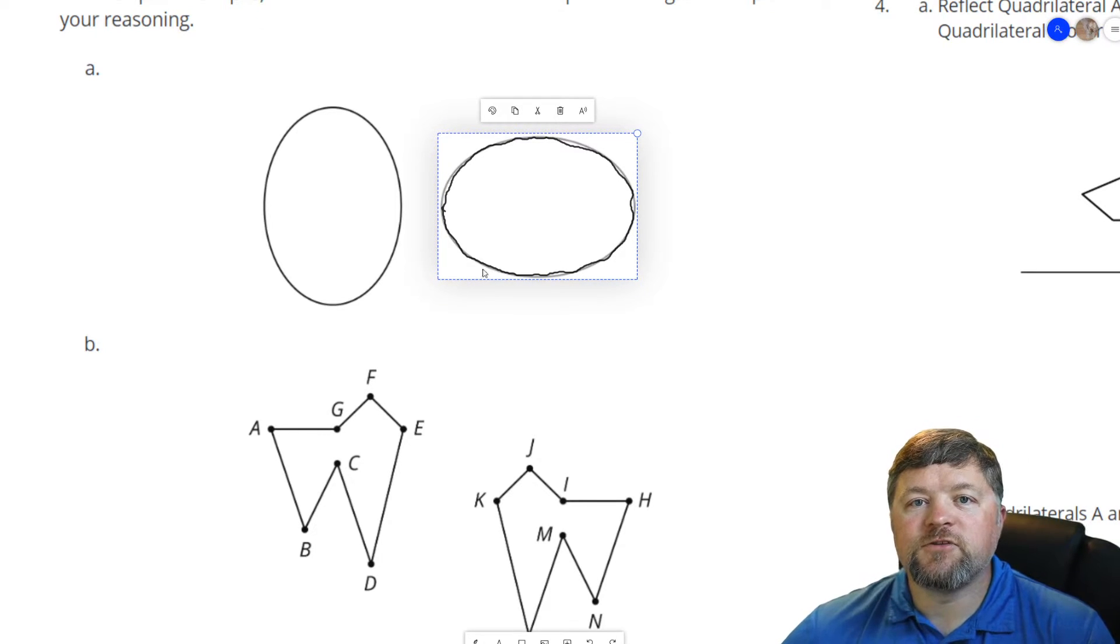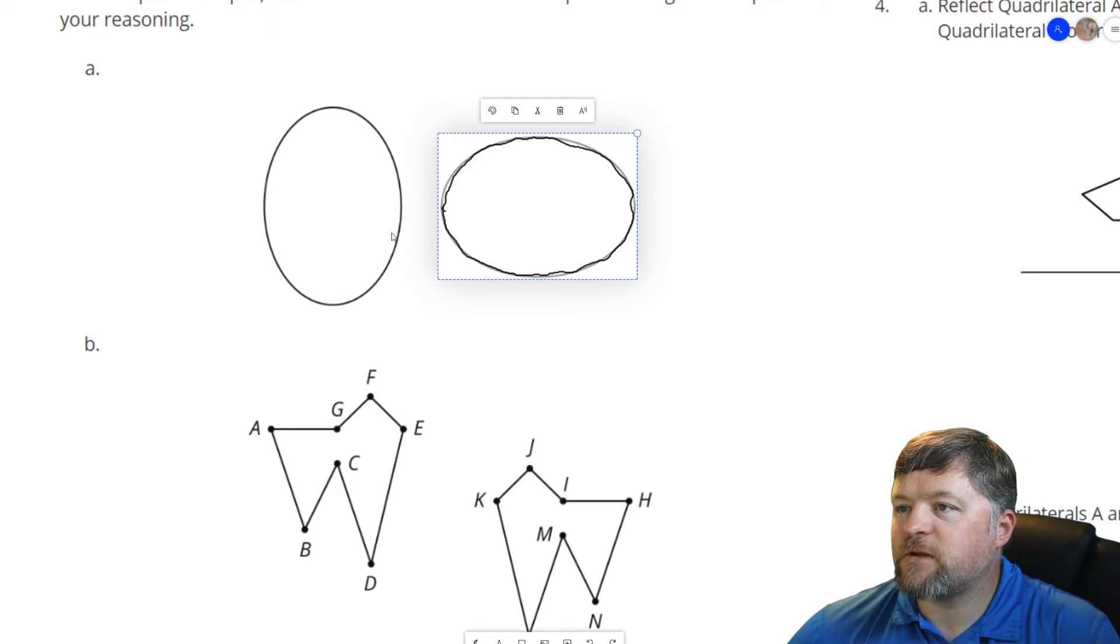Yes, I would say those two figures are congruent. Same shape and size. If I trace it on tracing paper and move it over this figure, it's the same shape and size which means it's congruent.